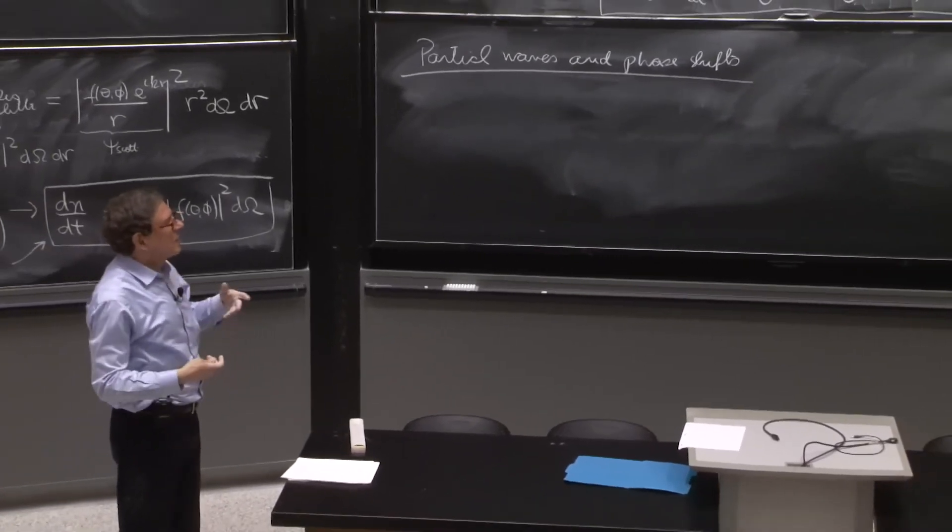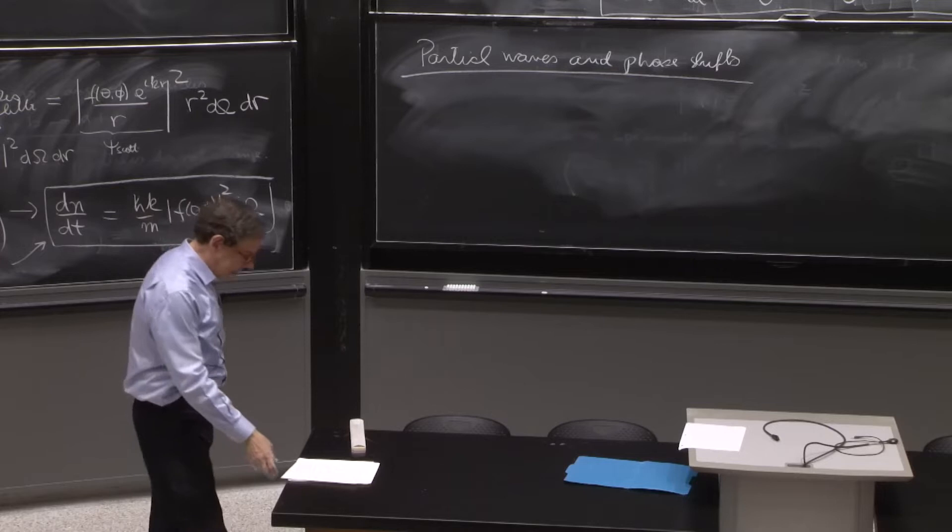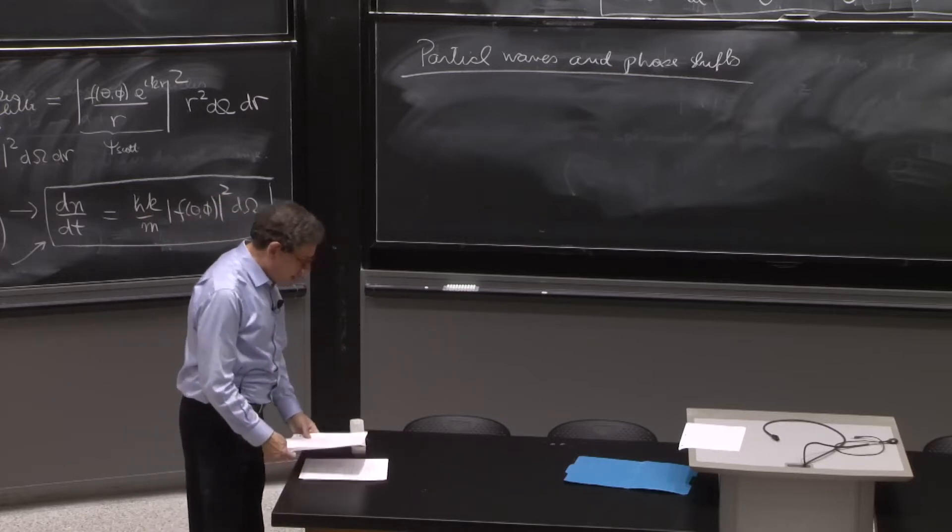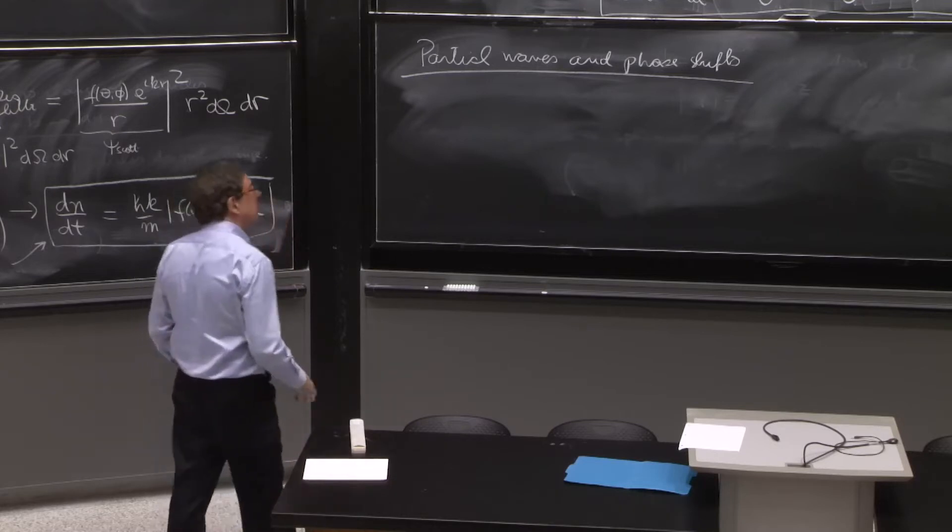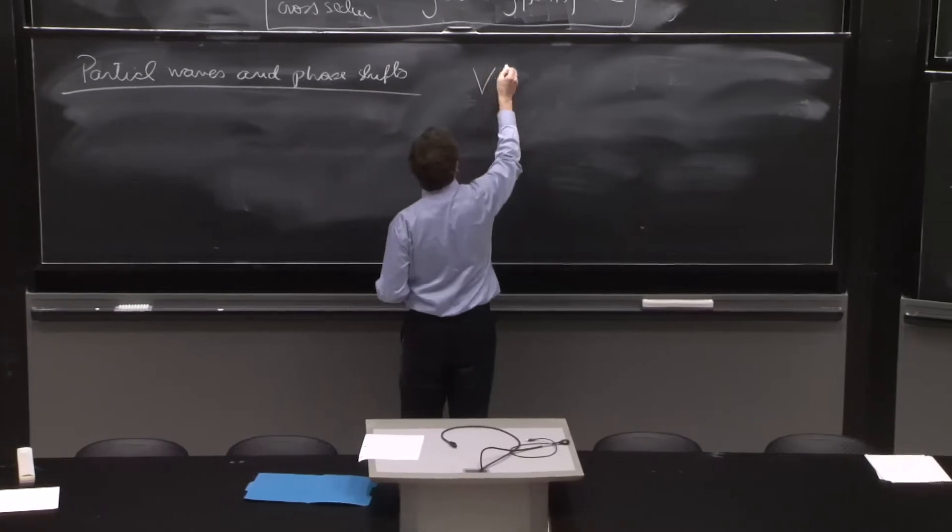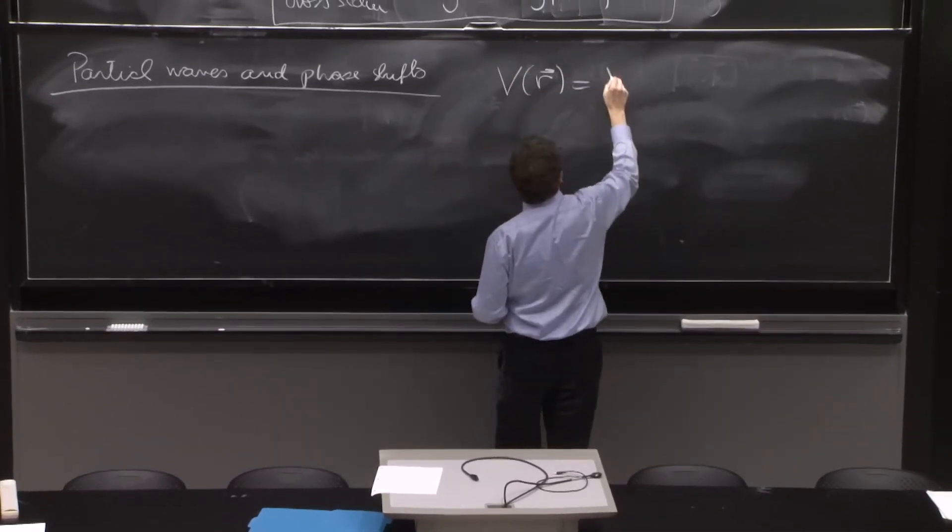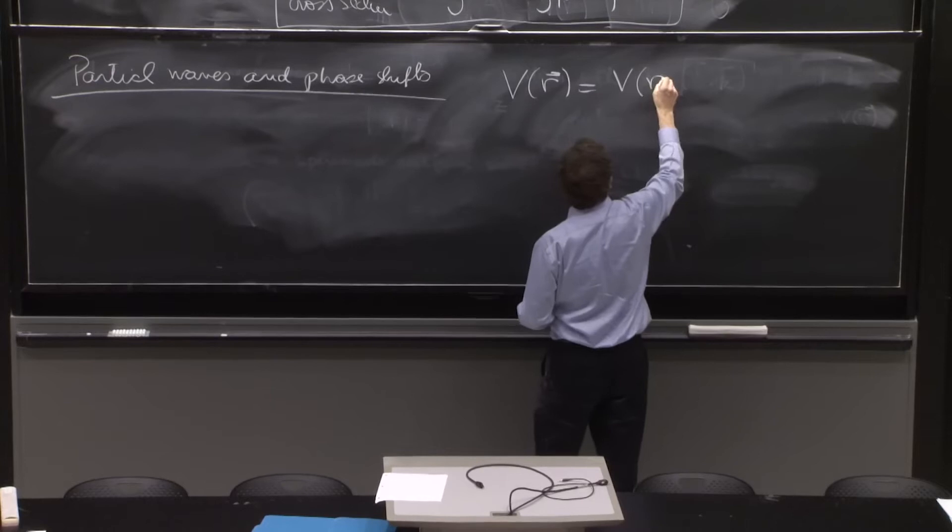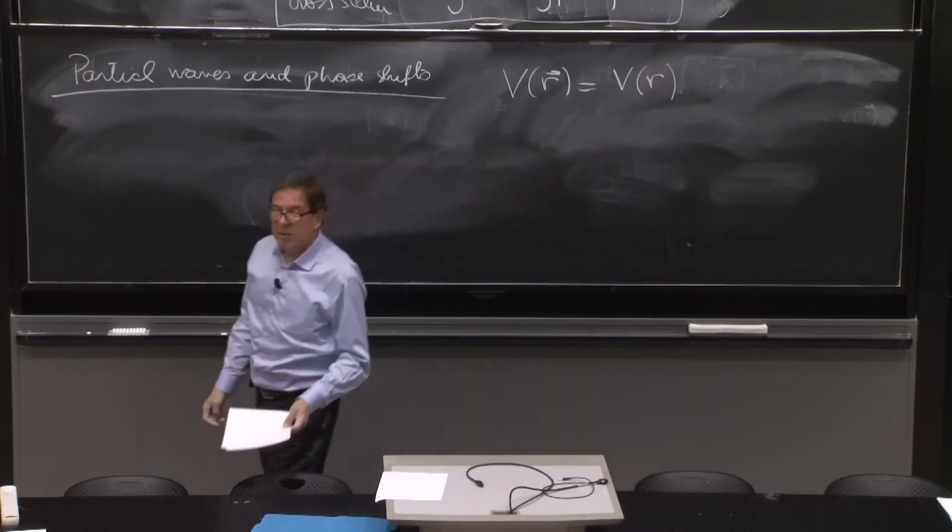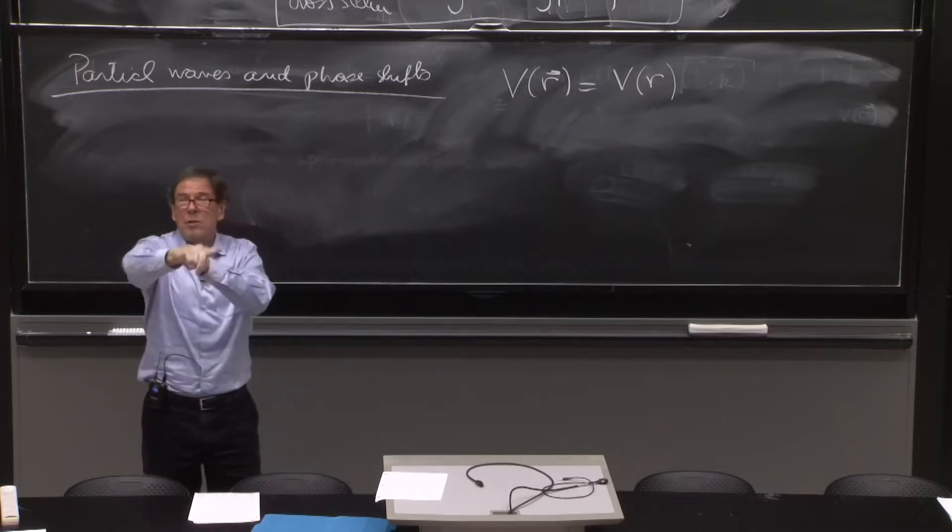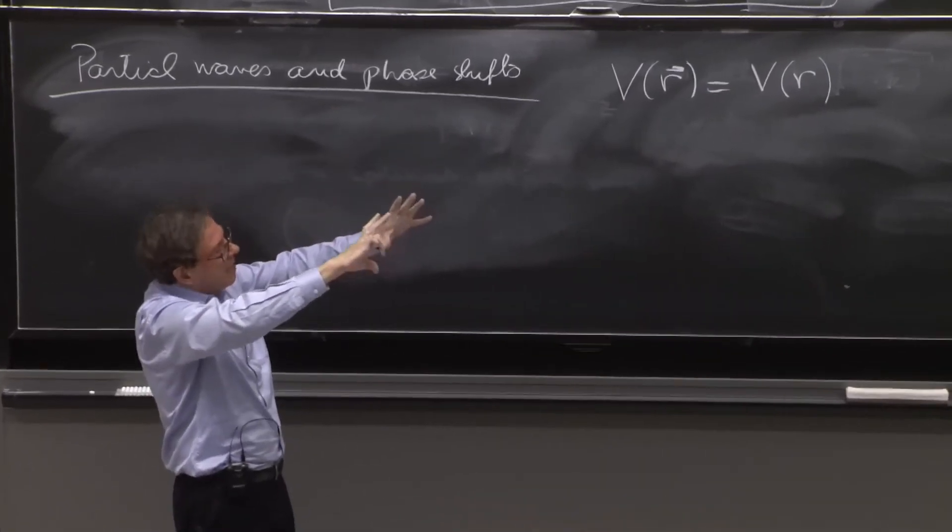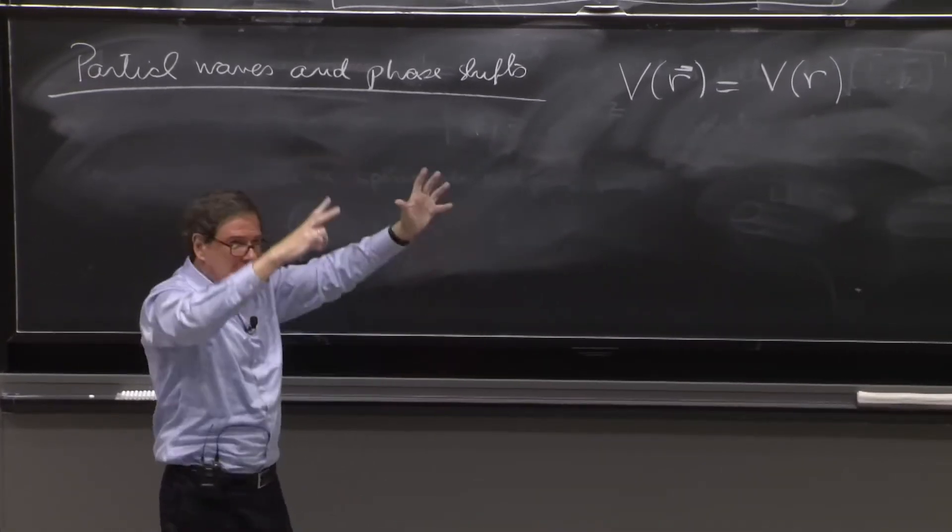So it's time to simplify these matters a little bit. And to do that, I will assume from now on that the potential is central, so V of R is equal to V of R. That will simplify the azimuthal dependence. There will be no azimuthal dependence. You see, the thing is spherically symmetric.